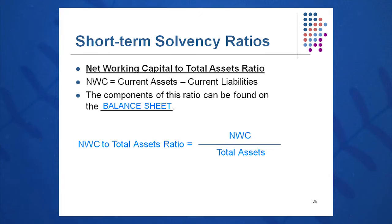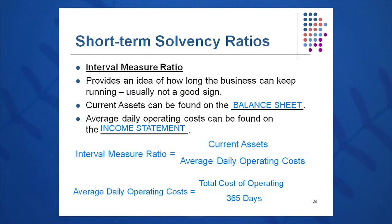All of that information comes from the balance sheet. The interval measure is an interesting and somewhat scary ratio — it looks at how long the business can keep running, which is usually not a good sign. It's current assets divided by average daily operating cost. Current assets come from the balance sheet; average daily operating cost comes from the income statement by taking total operating cost divided by 365. If you're calculating this ratio, you're likely asking how long your company can survive. Probably time to update your resume.